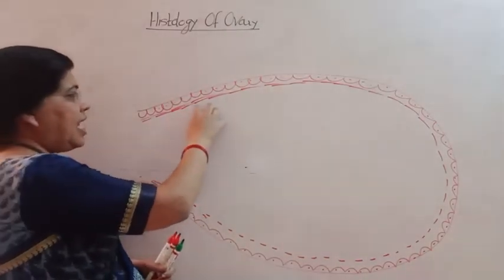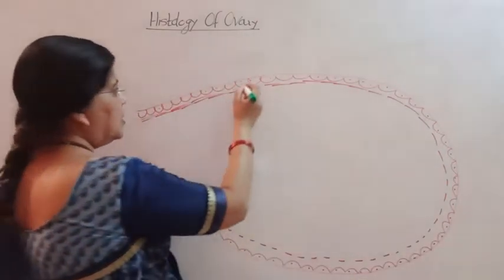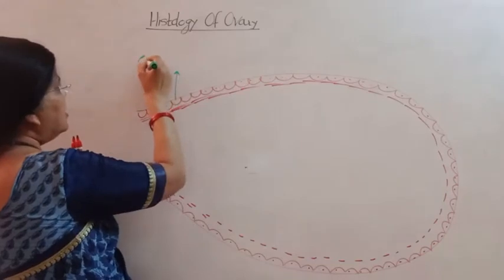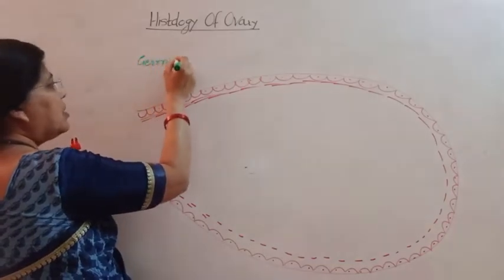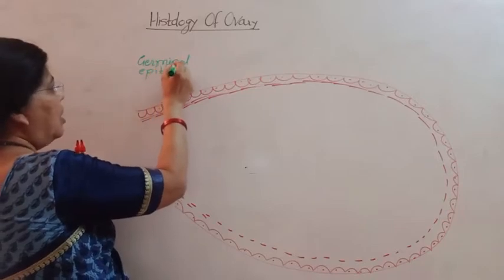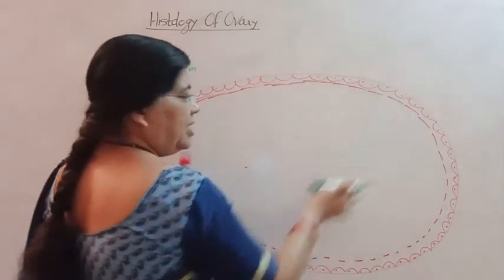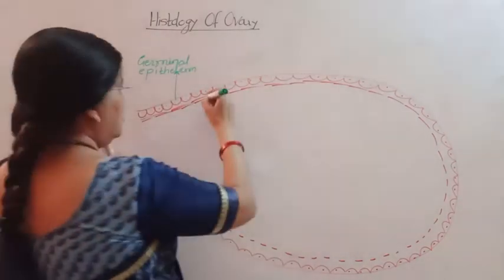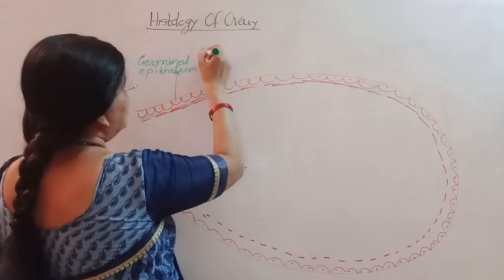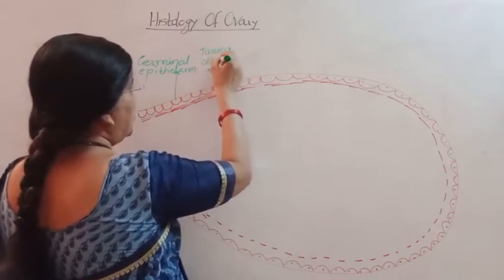The ovary is internally lined by a single layer of germinal epithelium. Below the germinal epithelium is the tunica albuginea.